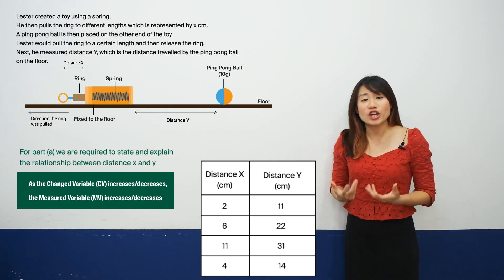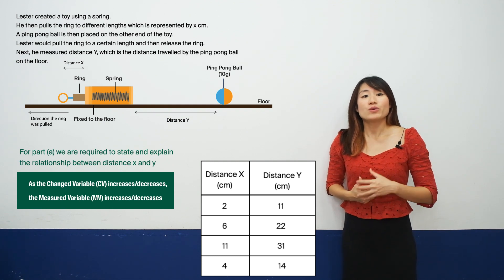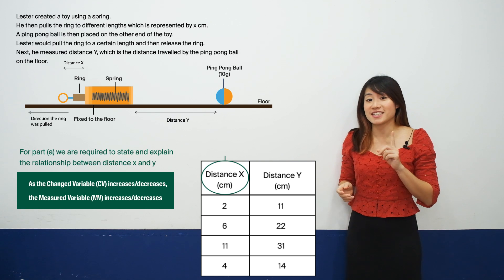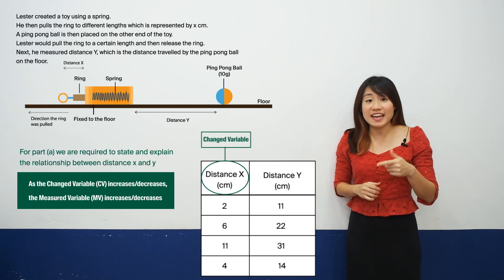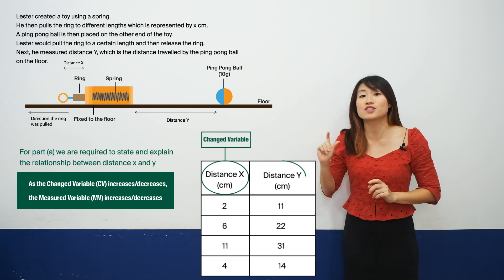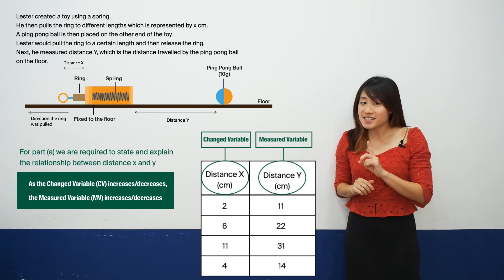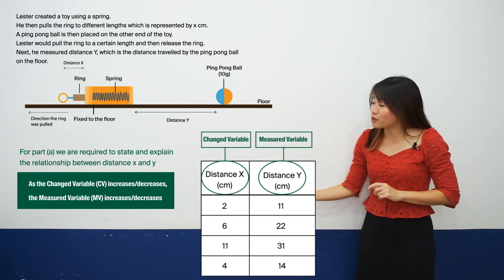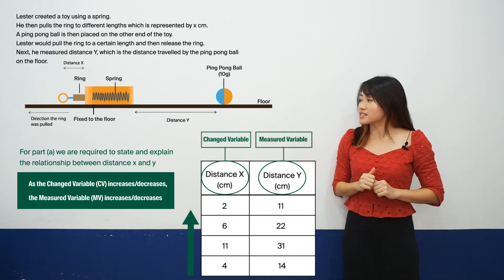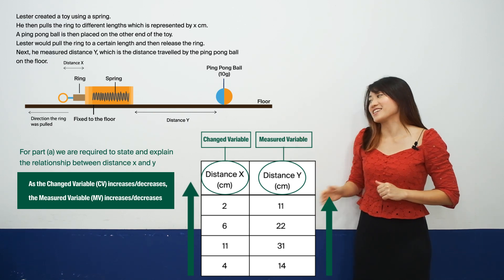So what is the change variable and what is the measured variable? We know that Lester is changing the length by pulling the ring which is distance X and he is then measuring the distance the ball travels when he releases the ring which is distance Y. Next, just refer to this table and we can tell that as distance X increases, distance Y increases as well.